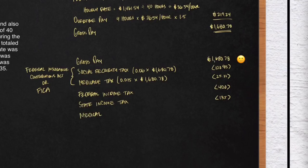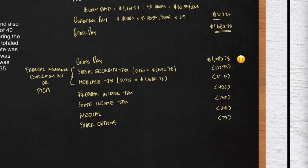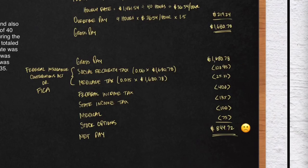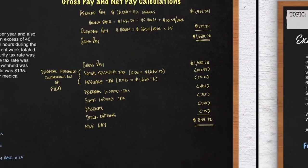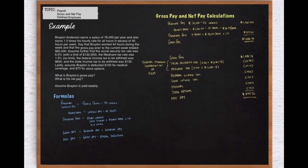Next, Braylon elected to have some medical coverage — that will be $100. And lastly, his company offered stock options, which is also a deduction of $75. Those last two — medical and stock options — are actually considered voluntary deductions; he doesn't have to deduct those amounts, but he chooses to. So now you take your gross pay minus all your deductions, and you'll get your net pay, which in this case is $844.72.